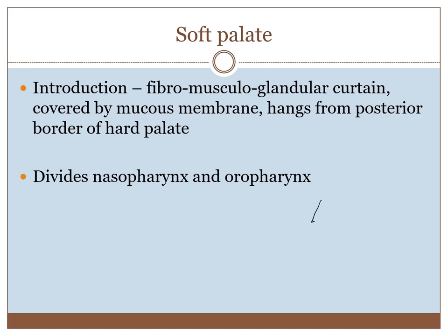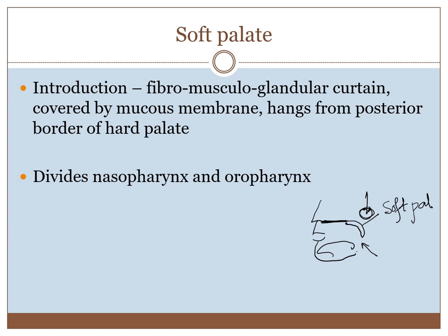If the nose is above and the mouth is below, with the hard palate separating them, the soft palate is the fibromuscular curtain hanging below the hard palate. The nasal cavity leads to the nasopharynx, and the oral cavity leads to the oropharynx. The soft palate divides the nasopharynx from the oropharynx.